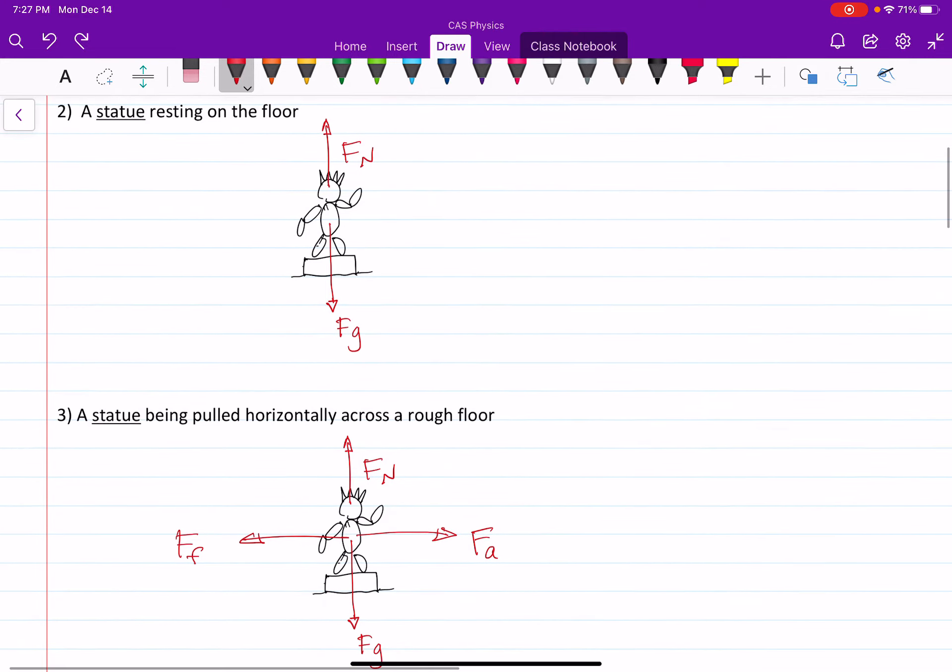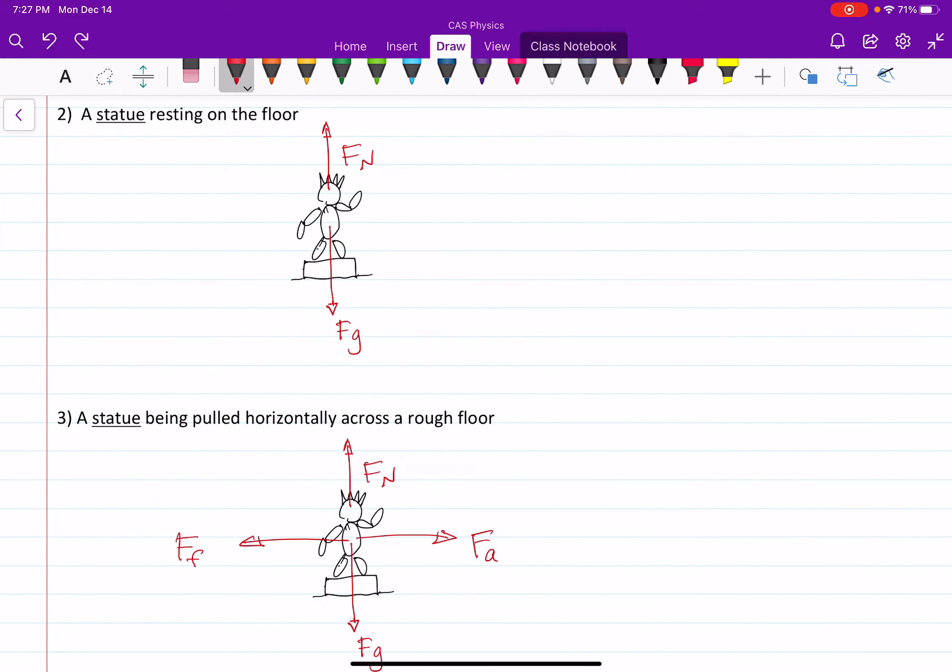For the second question, a statue resting on the floor. So in this case, we've got the force of gravity down. And since the statue is being supported by the floor, you've got the normal force acting on it in the upward direction.